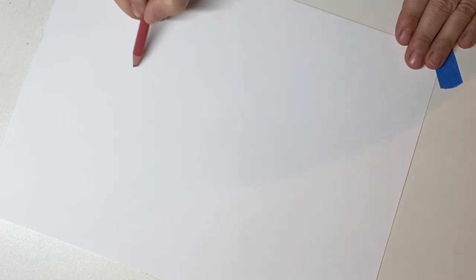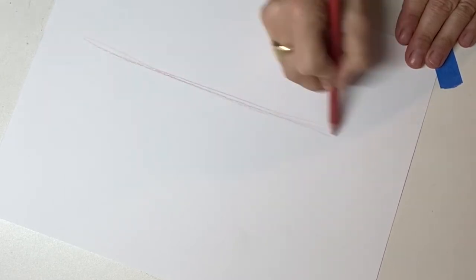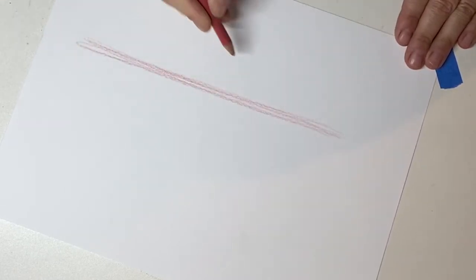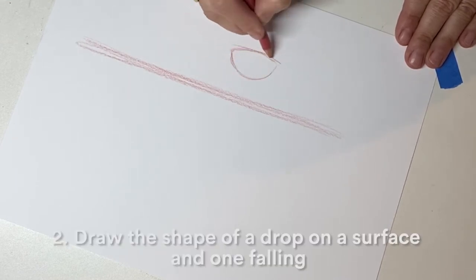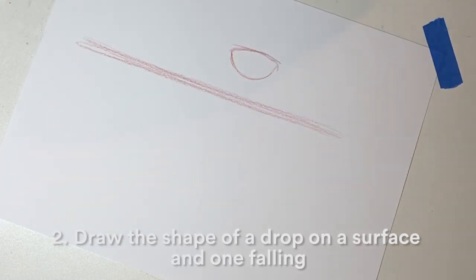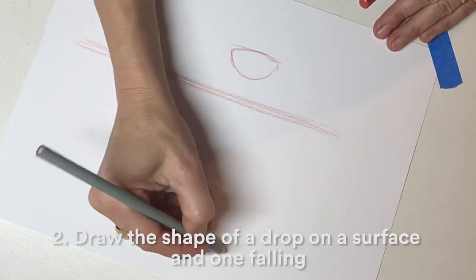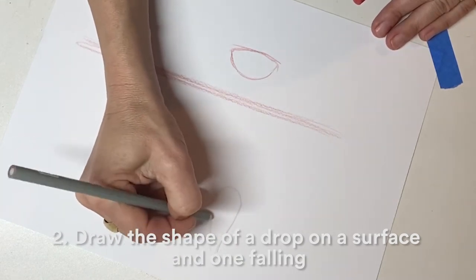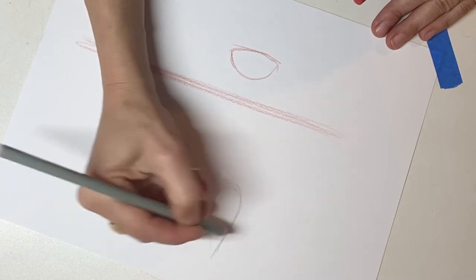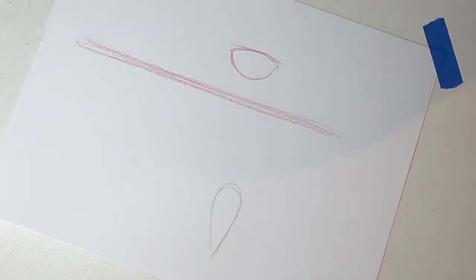Okay, so I like to start with making a surface where, say, we have this drop that fell on it, and maybe a drop is falling here.